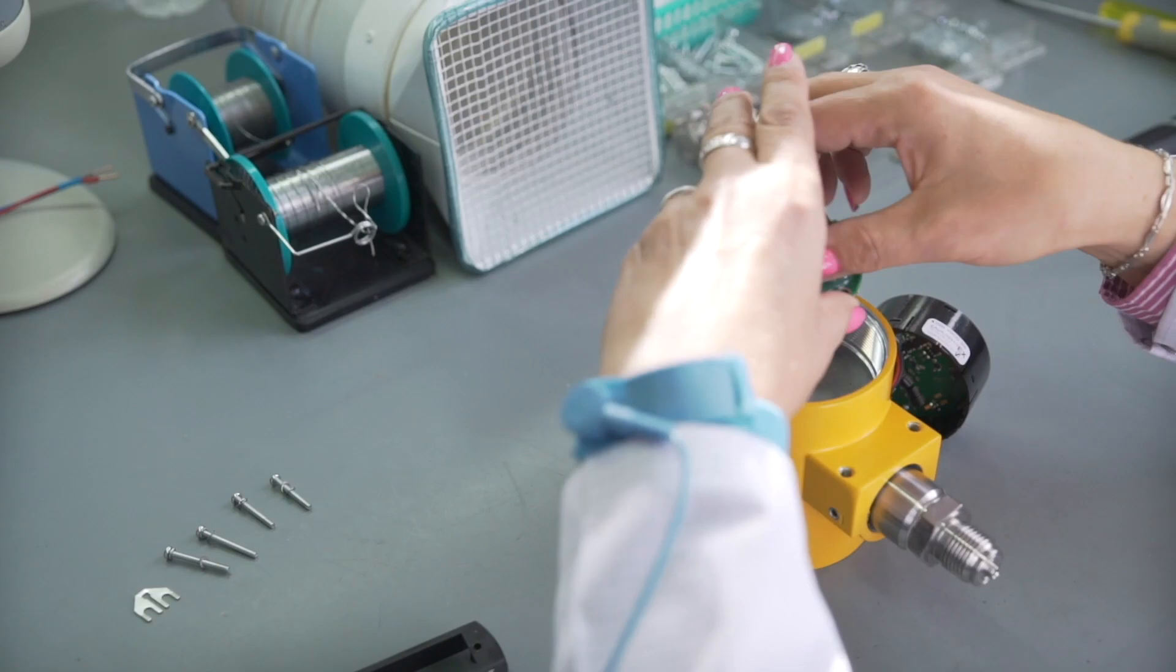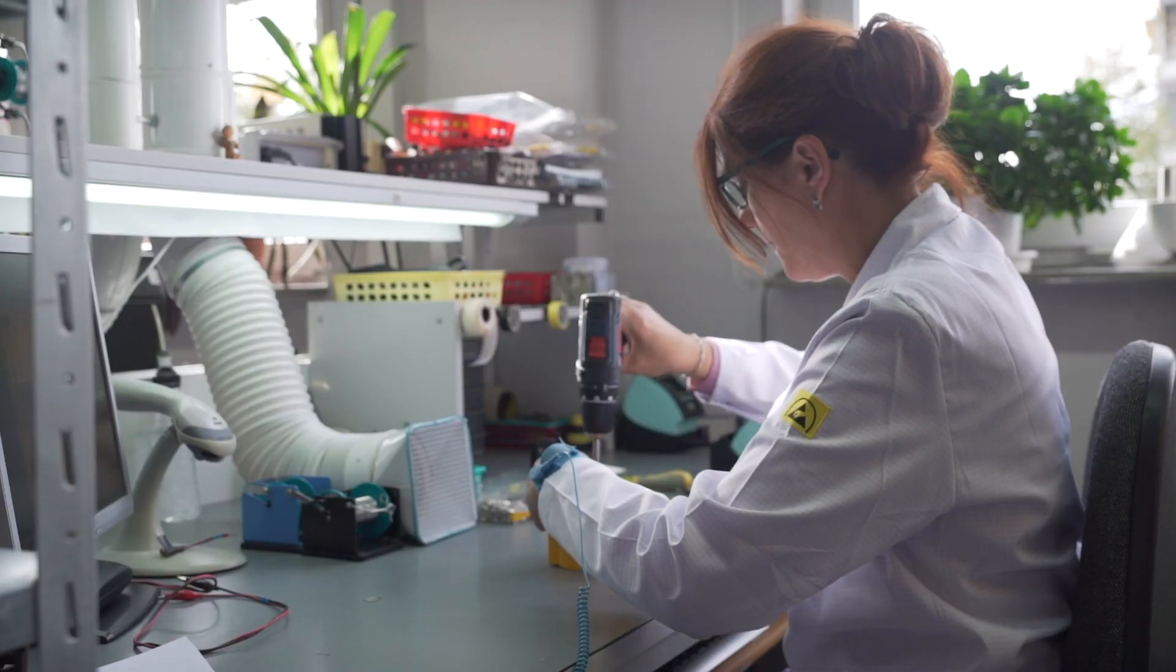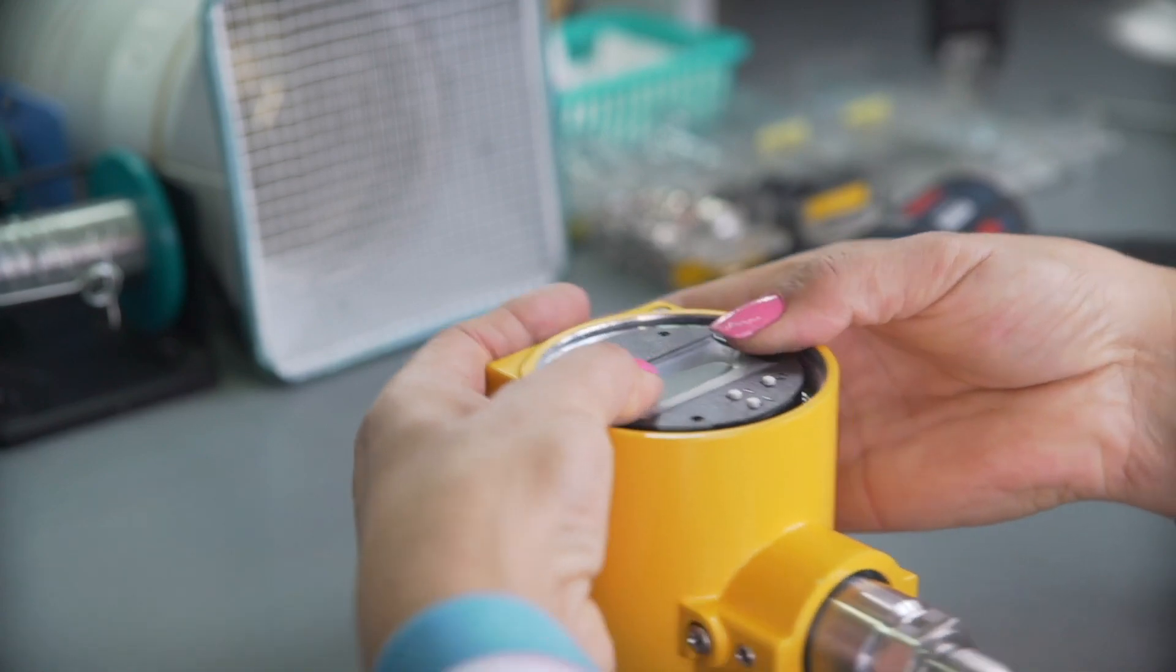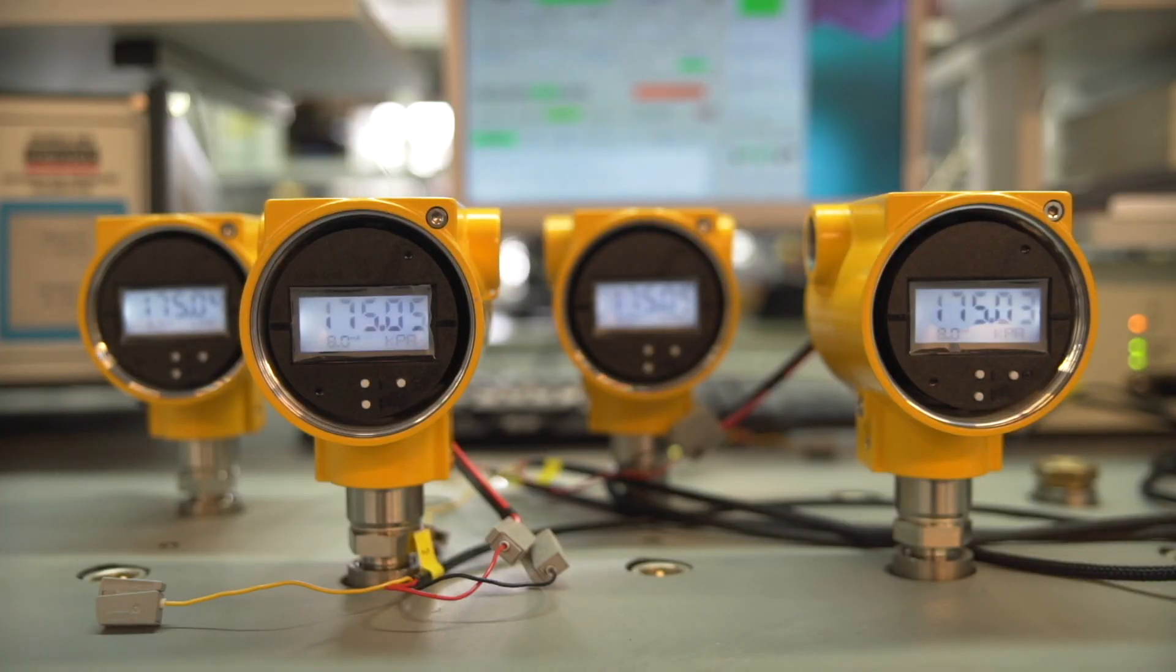Assembly of electronics in the body of the device is the next stage. It is time for calibrating the transmitter.